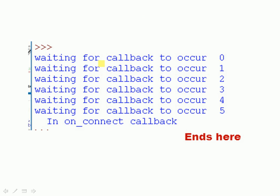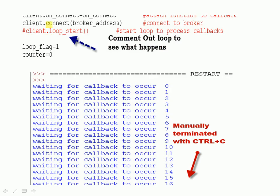Let's see how it works. You can see 'waiting for callback to occur,' and it waits five seconds, then it gets the callback and the script ends. Now let's sabotage the script — all I'm doing is stopping the loop from starting by commenting it out. And you can see it keeps going, 'waiting for the callback to occur,' and I terminated that script using Control-C because it was never going to end — the flag was never going to be set because the loop wasn't running. Without the loop running, the callback's not going to be triggered. You need to have the loop running to trigger the callback.